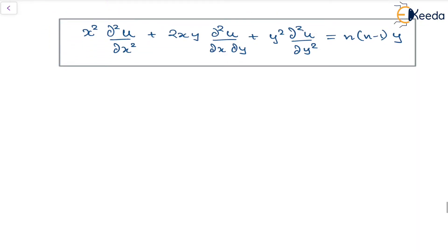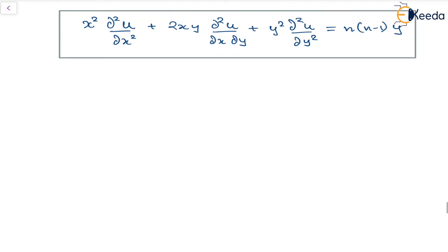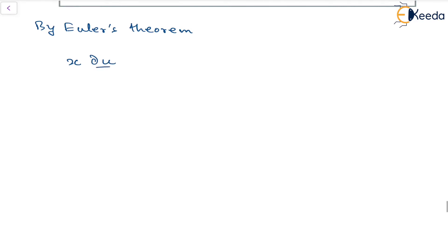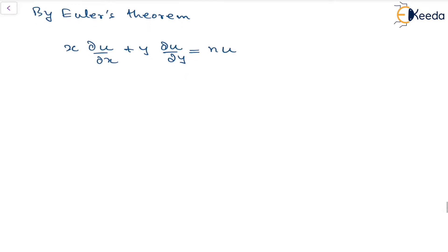Now we'll try to see the proof. We already know by Euler's theorem that x times (du/dx) plus y times (du/dy) is equal to n times u. Let us differentiate this partially with respect to x and then with respect to y. Let us call this equation 1.